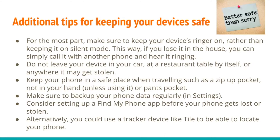Here are some additional tips for keeping your devices safe. Try to keep your device's ringer on rather than keeping it on silent mode — if you lose it in your house, you can simply call it with another phone and hear it ringing. Do not leave your device in your car, at a restaurant table, or anywhere else where it may get stolen. Keep your phone in a safe place when out and about, such as a zip-up pocket. Do not keep it in your hand unless you are using it, or in a pants pocket where it can be easily taken. Make sure to regularly back up your phone data. Consider setting up a Find My Phone app before your phone gets lost or stolen. Alternatively, you could use a tracker device like Tile to locate your phone, and we do have past webinars on Tile and other tracker devices if you're interested.